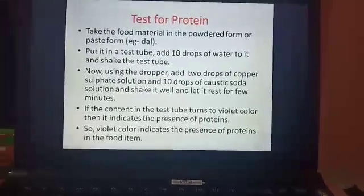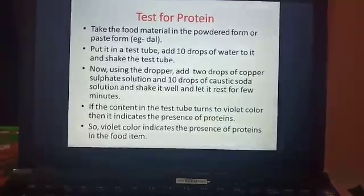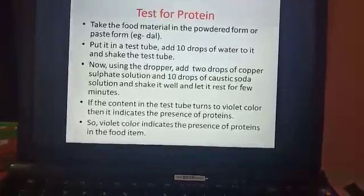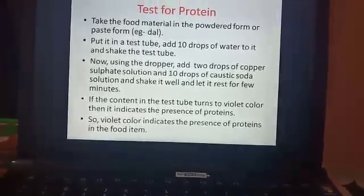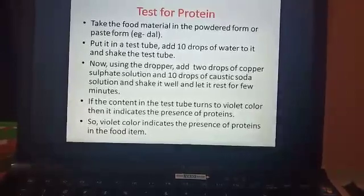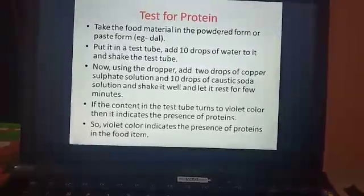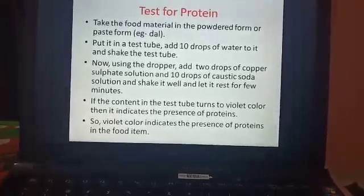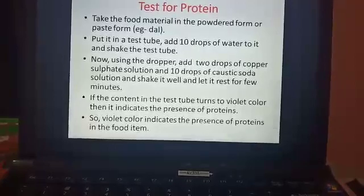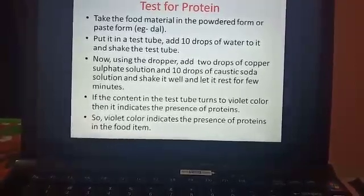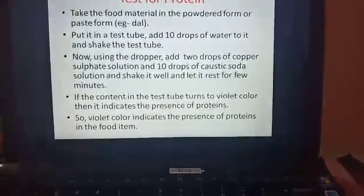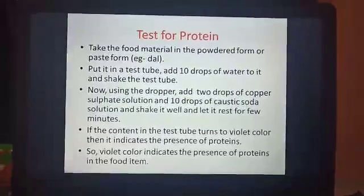Next is the test for protein. Take the food material in powdered or paste form — for example, crush dal into a powder — and put it into a test tube. Add 10 drops of water and shake well. Then using a dropper add 2 drops of copper sulfate solution and 10 drops of caustic soda solution, shake well and let it rest for a few minutes. If the content in the test tube turns violet in color, it indicates the presence of proteins.